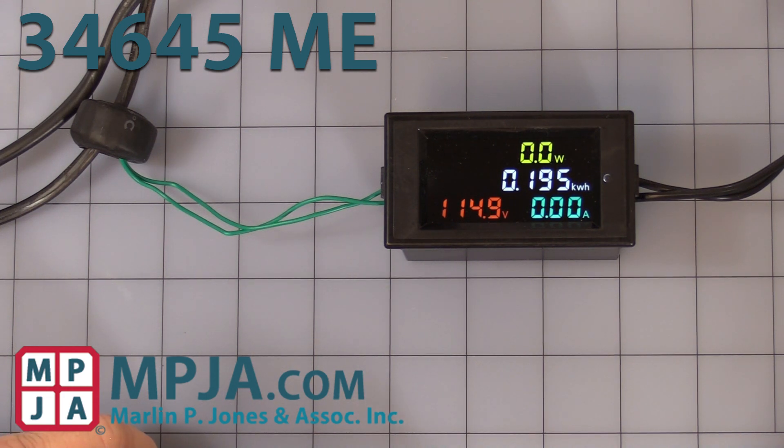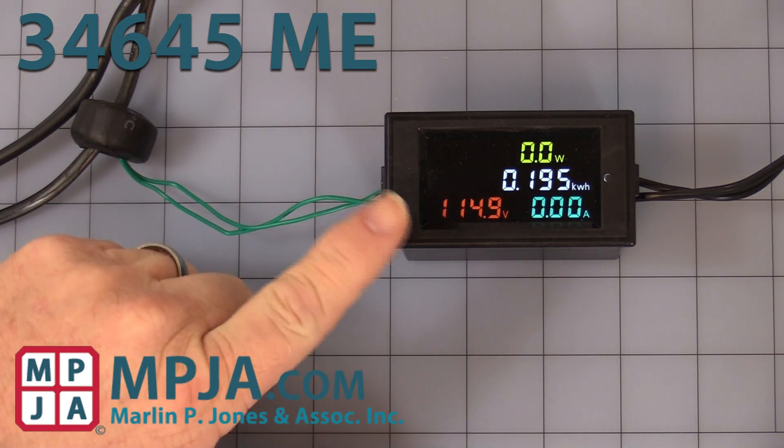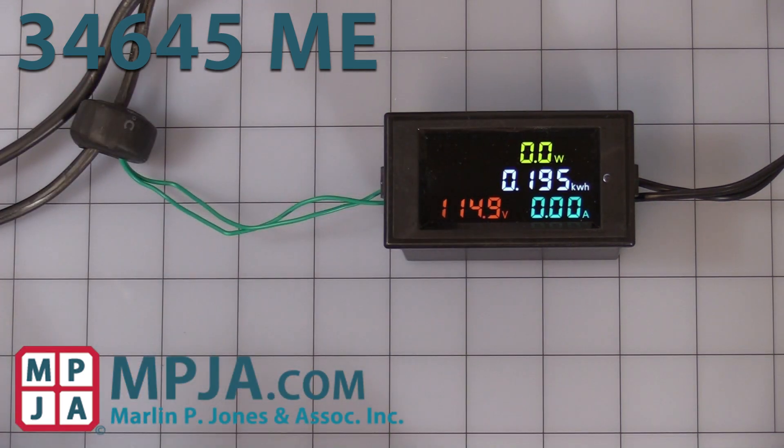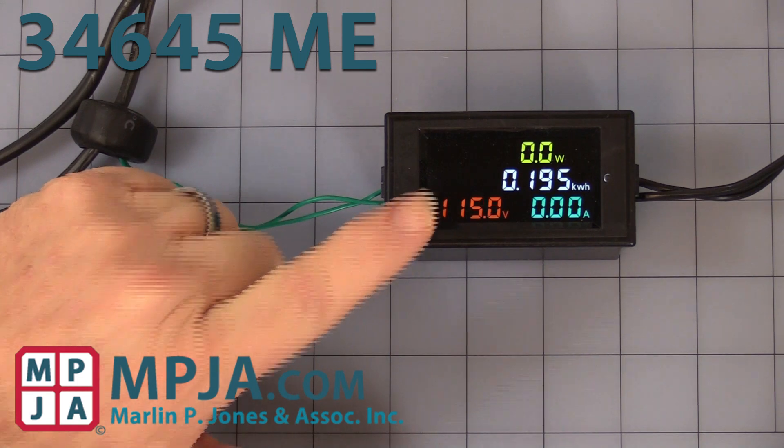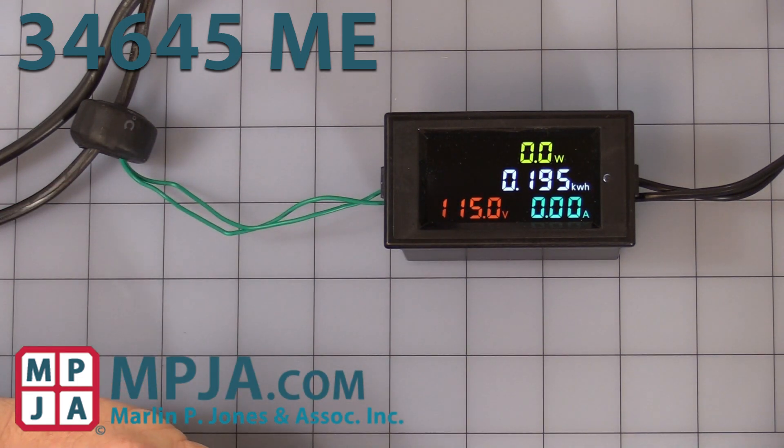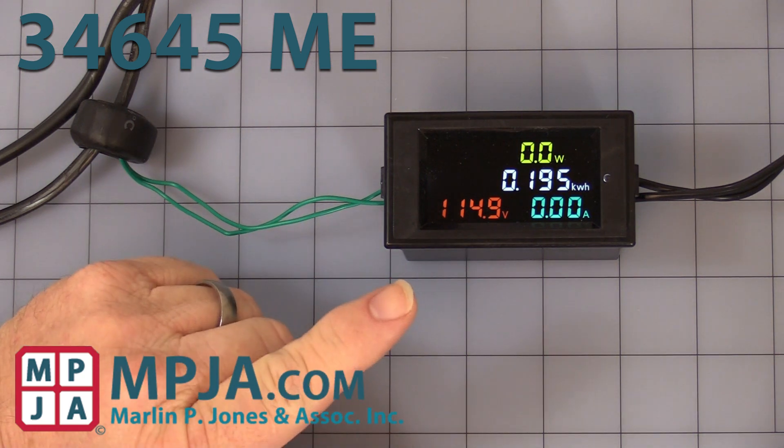First thing everybody notices is a nice four-color LCD display. Yellow is your active watts, white is your kilowatt hours which will accrue and keep in memory. I'll show you how to reset that later.